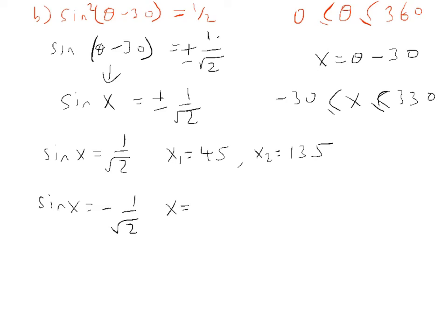For the minus 1 over the square root of 2, I'll just write down x. If we put that in a calculator, we should get minus 45. That's obviously not within our range. And so we could do 180 minus minus 45. And that would give us a third value, which is 225. And we can generate another value, which I'll call x4, by adding 360 to this one. And that will give us 315.